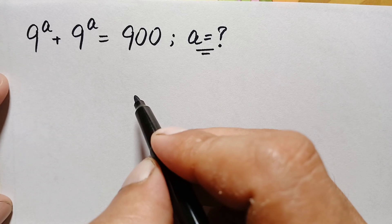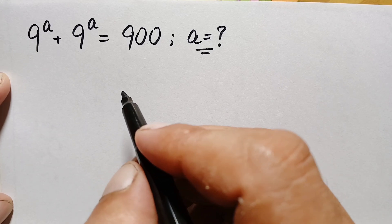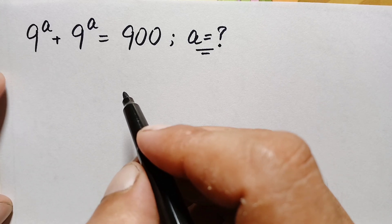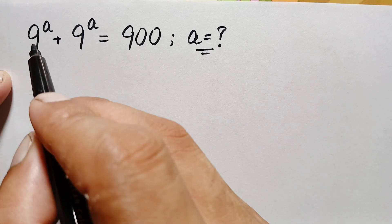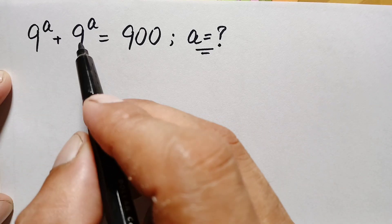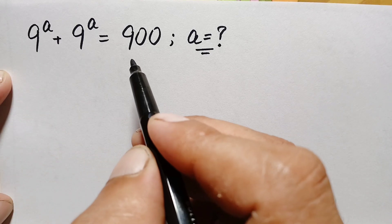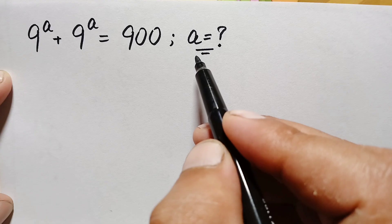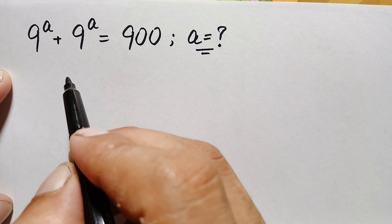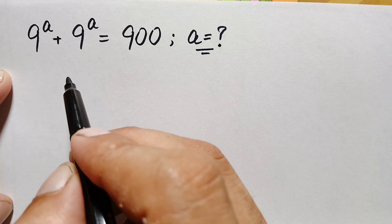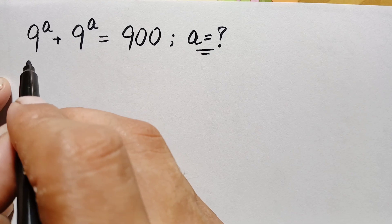Hello everyone, you are welcome. Today we have a new interesting exponential math problem: 9^a plus 9^a is equal to 900. We'll find the value of a. Let's start our solution.